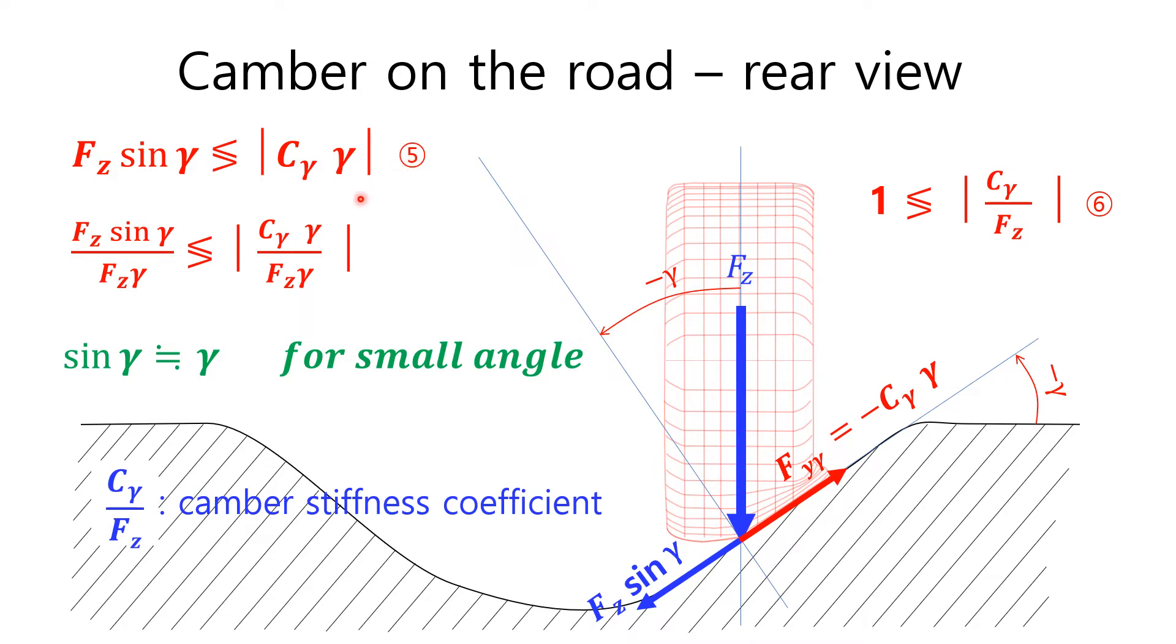If you divide both sides by Fz, you can get equation 6, considering sin gamma is equal to gamma for a small angle.